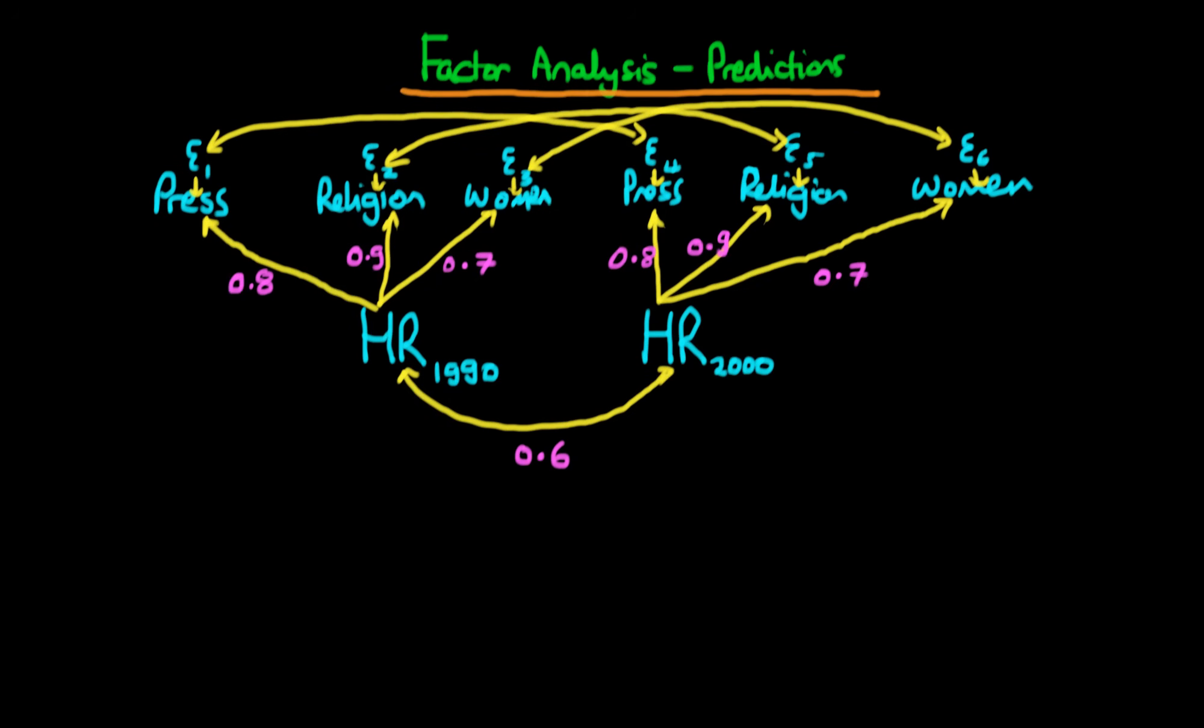In this video, I want to continue our discussion of how we can use model output from factor analysis in order to help us make predictions about what the covariance between certain variables are. And this example is going to be a little bit more complicated than the one which we showed in the last video.